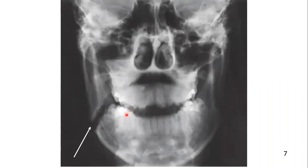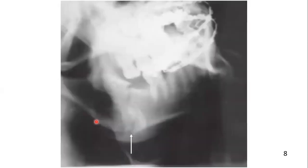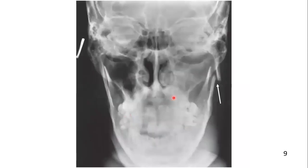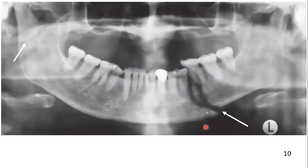Here in this radiographic picture, you can see the posterior-anterior view demonstrating a fracture in the angle area of the mandible. This is a lateral oblique view showing a fracture in the angle area. This is a reverse Towne view showing displacement of the condylar fracture. This panoramic view shows a displaced fracture of the left mandibular body and a right subcondylar fracture.